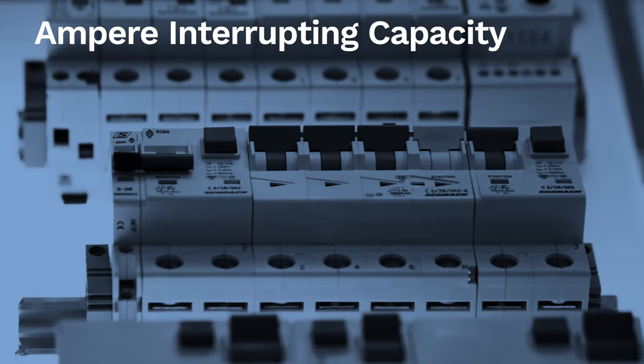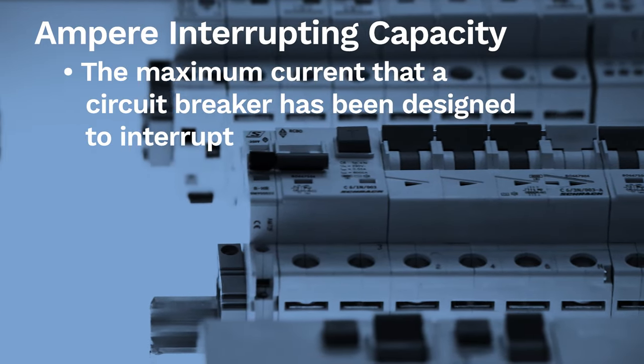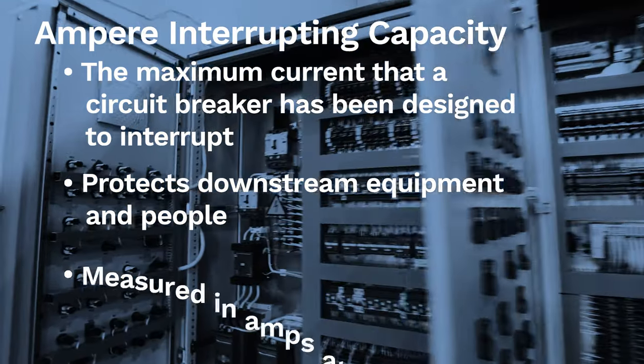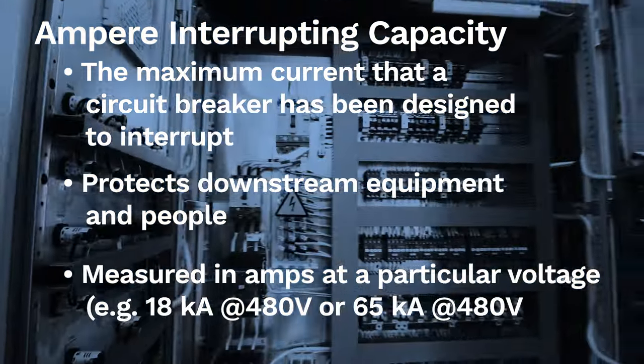Ampere interrupting capacity is the maximum current that a circuit breaker has been designed to interrupt, protecting downstream equipment and people. AIC is measured in amps at a particular voltage.